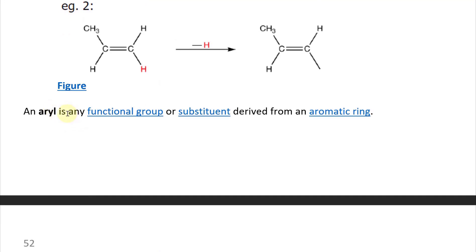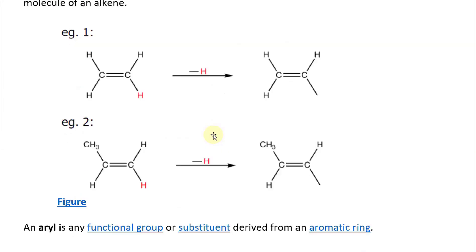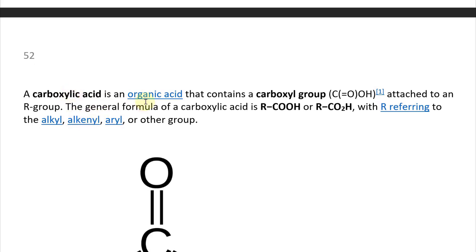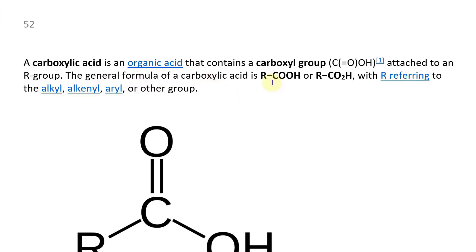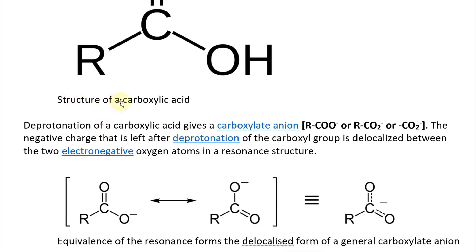An aryl is any functional group or substitution derived from an aromatic ring. So any substitution used or functional group derived from that aromatic ring is called an aryl. A carboxylic acid is an organic acid that contains a carboxyl group — a C with a double bond O then OH — attached to an R group. The general formula is R-COOH or R-CO2H, with R referring to an alkyl, alkenyl, aryl, or other group.